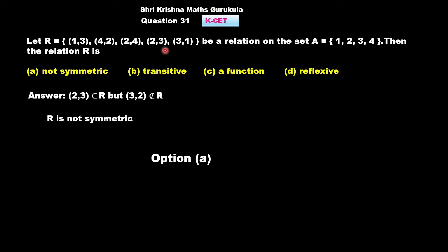2 is also mapped to 3. So this is only a relation, not a function. So second condition is not satisfied. So this is also not the right option. If you want, you can check for transitivity also. So right answer is option A.